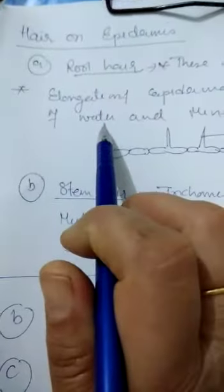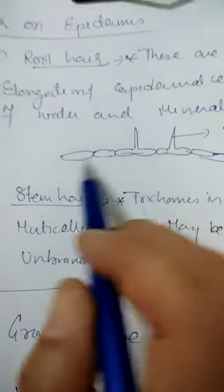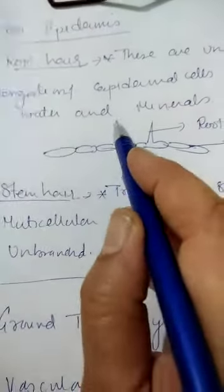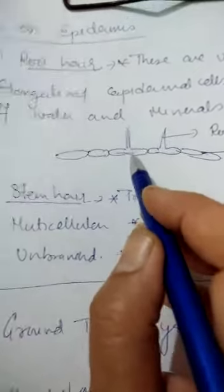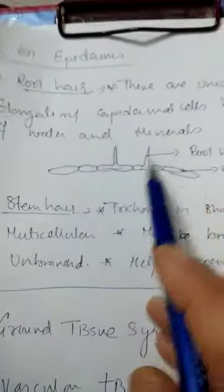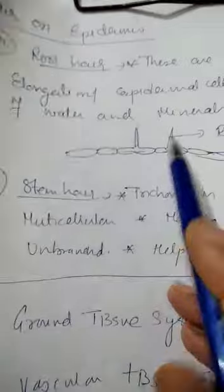Hair present on epidermis are two types - root hair and stem hair. Root hairs are unicellular. These are parenchymatous epidermal cells and their elongation forms the unicellular hair which are present in the root and they help in water and mineral absorption.